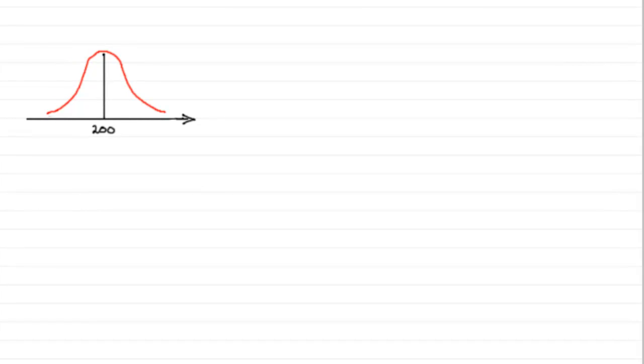Okay then, well the first part is dead easy. We're given this distribution, the normal distribution with a mean of 200 and asked to state what the median is. Well, the median is exactly the same as the mean because the distribution is symmetrical.